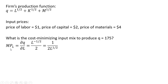First, we'll get the marginal product of labor by taking the partial derivative of the production function with respect to labor. We bring down the one-half in front and subtract one from the exponent, giving us the following result. We can then move the L to the negative one-half power down into the denominator.